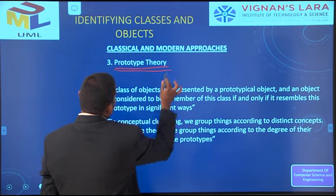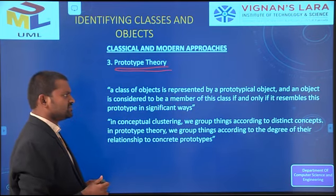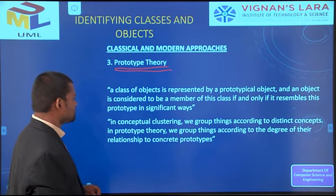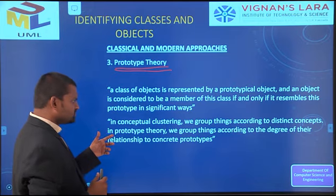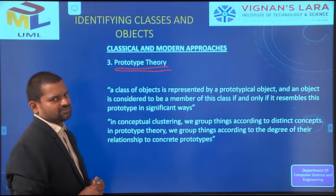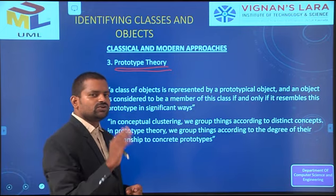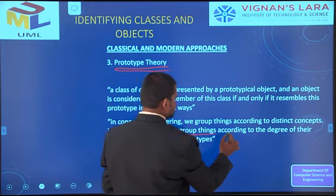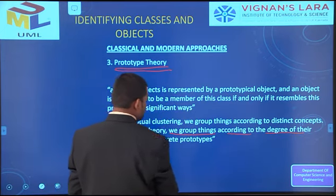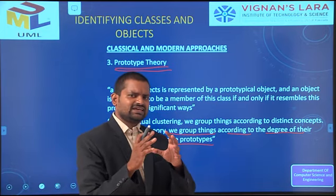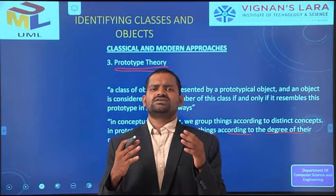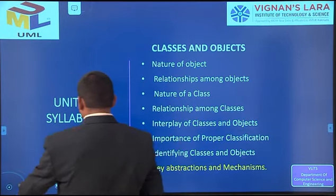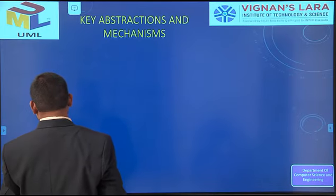The third approach is prototype theory. An object is considered a member of a class if and only if it resembles a prototypical object significantly. In prototype theory, things are grouped according to their degree of resemblance to the prototype. These three approaches establish different kinds of classes and objects.